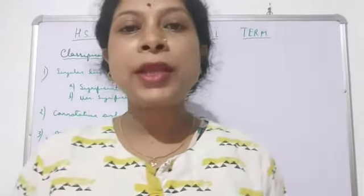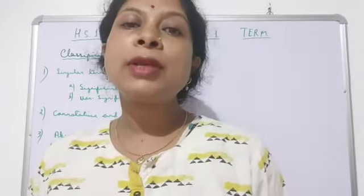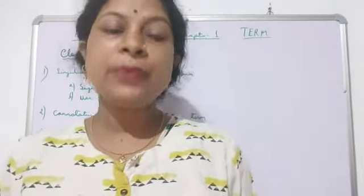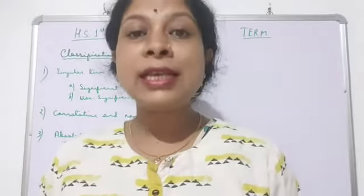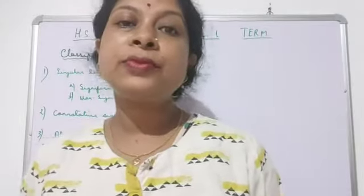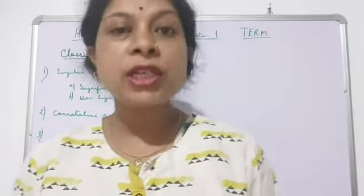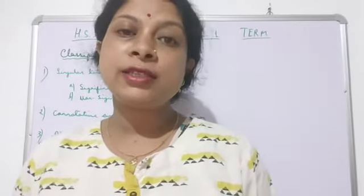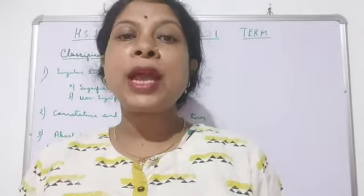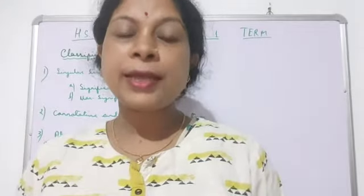The next point is denotation and connotation of term. Denotation means to denote an object, and connotation means to connote its qualities. The relation between denotation and connotation is an inverse variation — when one increases the other decreases. When denotation increases, connotation decreases; when denotation decreases, connotation increases; and similarly for connotation. This has been explained with an example in the previous video.